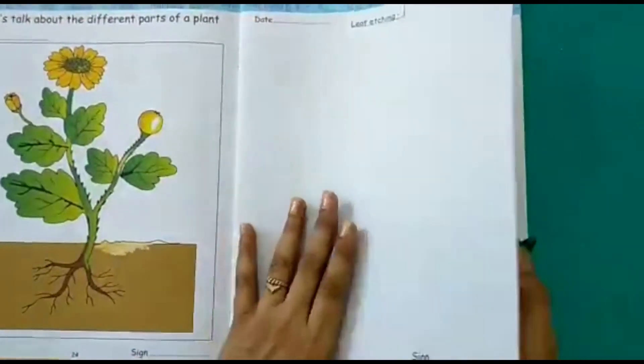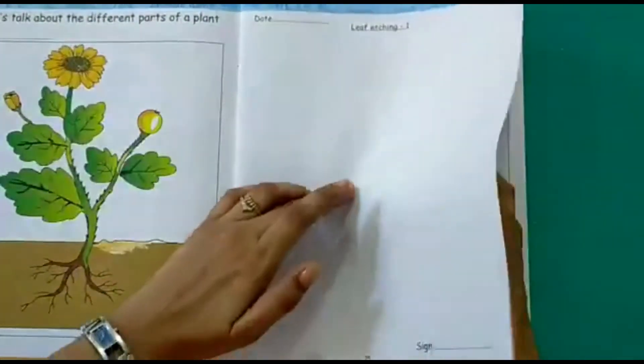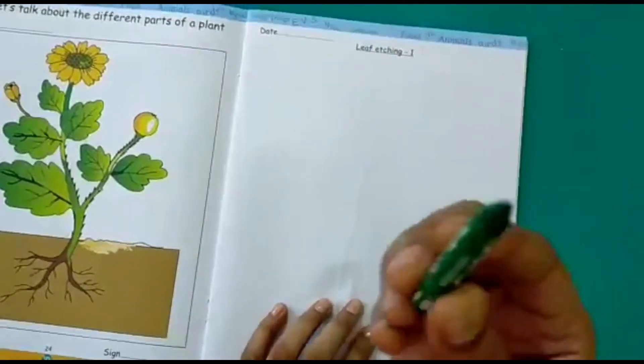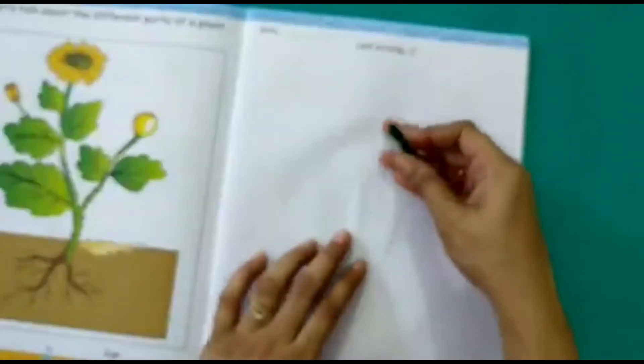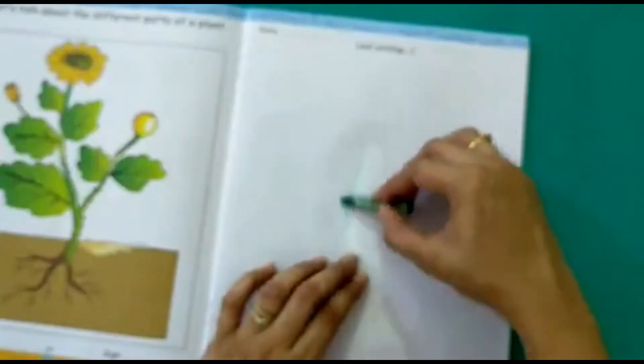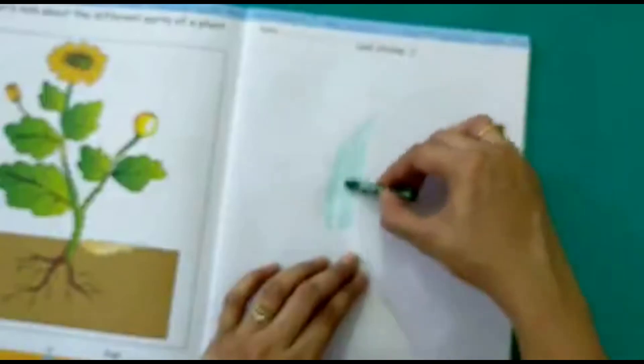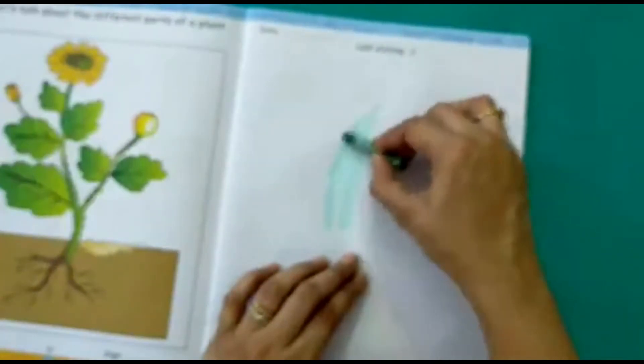I have placed the leaf here. And now take a crayon. I have taken a green crayon here. And we will just shade it. We will pass this crayon over the leaf. And then you can see.